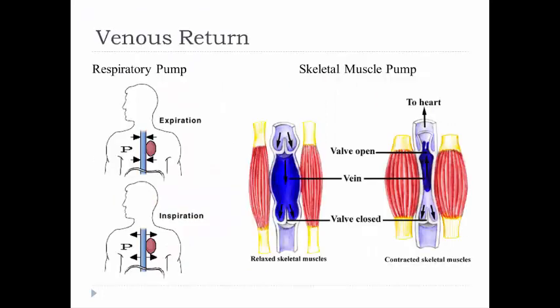When blood returns through veins at very low pressure, it must travel up from legs or arms against gravity. The respiratory pump helps: when you inhale, you create negative pressure inside the thoracic cavity — like a vacuum — expanding blood vessels and drawing blood up into the thoracic cavity. When you exhale, positive pressure squeezes those vessels. This alternating expansion and contraction acts like a pump.